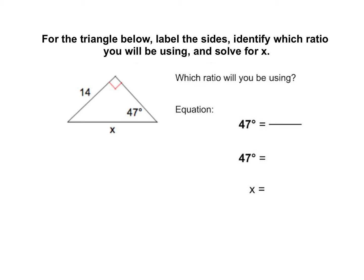See the 47 degree angle? And notice how the 14 is the leg that's across from it. So your 14 is going to be opposite, and then that x is across from the 90 degree angle. So that's your hypotenuse.